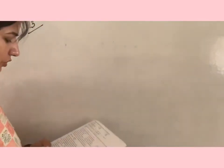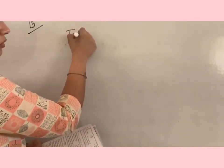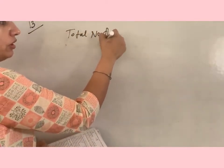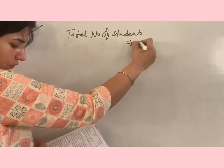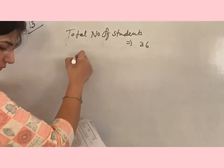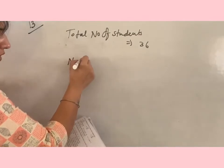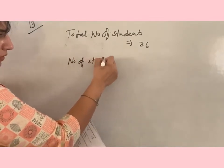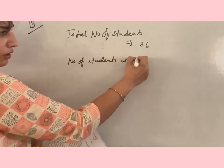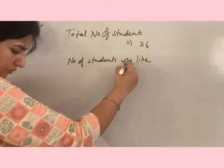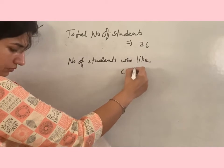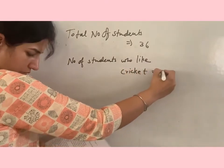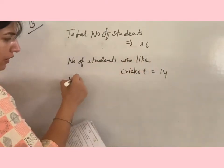So just pay attention here. In a class of 36 students, I'm writing here: total number of students is equal to 36, number of students who like cricket is equal to 14, number of students who like football is 9.